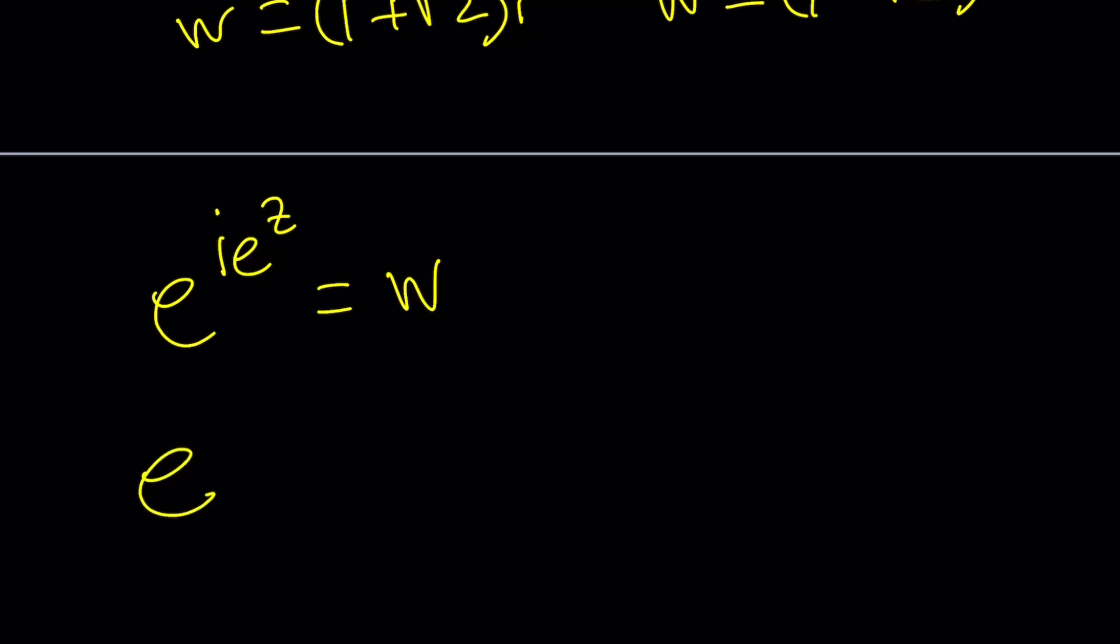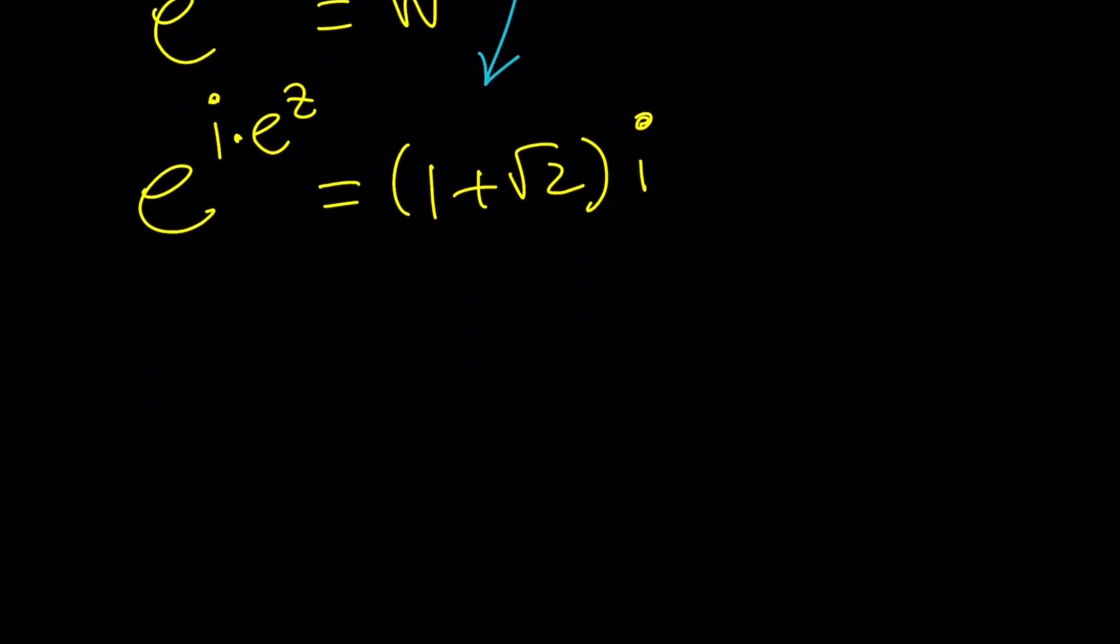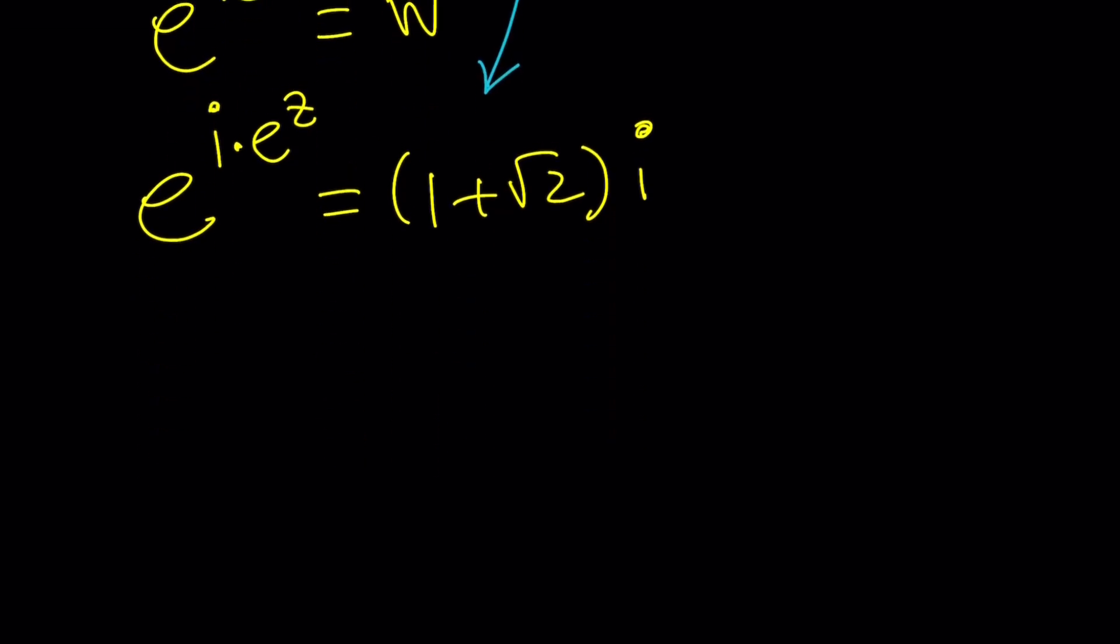e to the power ie to the z is w. So since w is 1 plus root 2i, let's go ahead and just write it as is. And e to the power ie to the z is going to be 1 plus root 2i. And then we're going to go ahead and natural log both sides, bring these down. Let me go ahead and work with one of them, because the other one is going to be so similar. But here's the challenge.